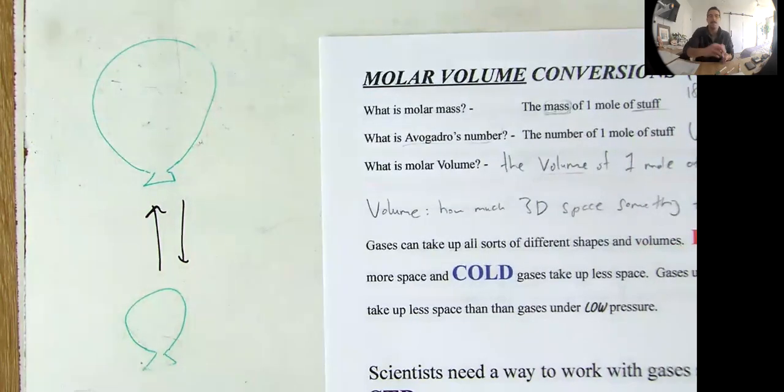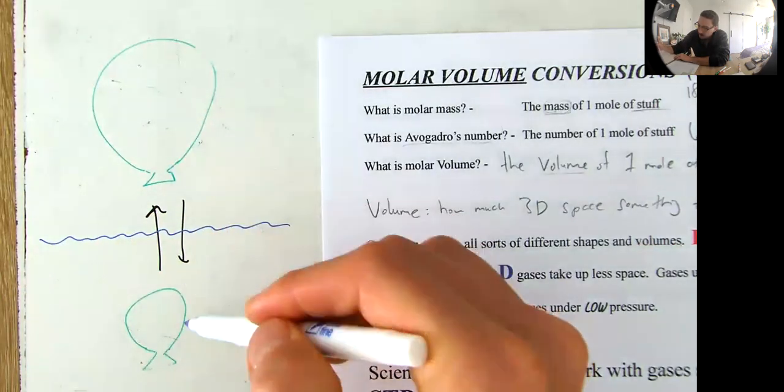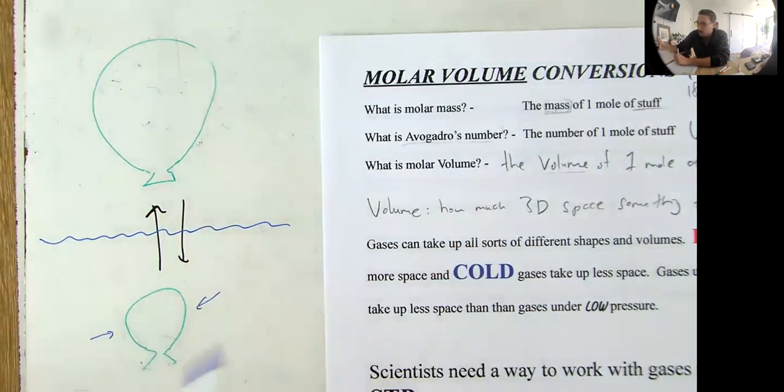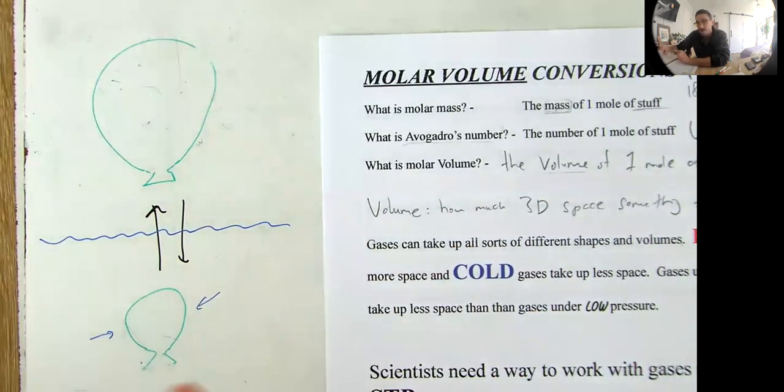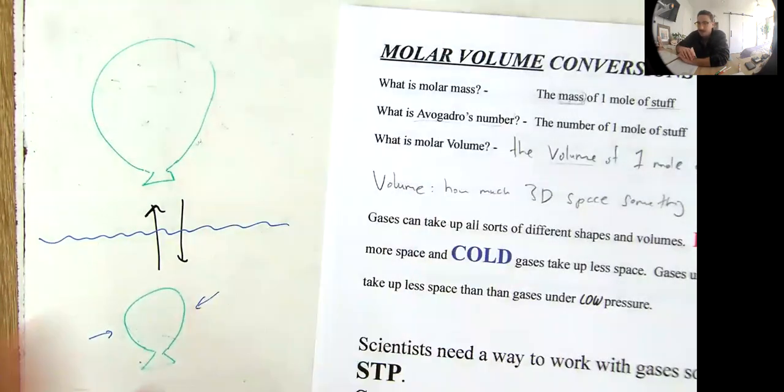Okay. Gases under high pressure take up less space than gases under low pressure. Like if, for example, this balloon on the top was put underwater, it would become smaller because the pressure around the balloon, the water pressure around the balloon would shrink the air or the gas that's inside of the balloon. Okay. So there's all these different things that could happen to gases.